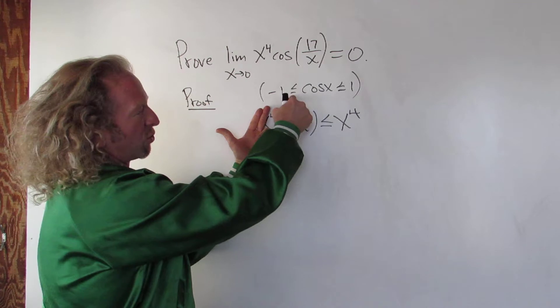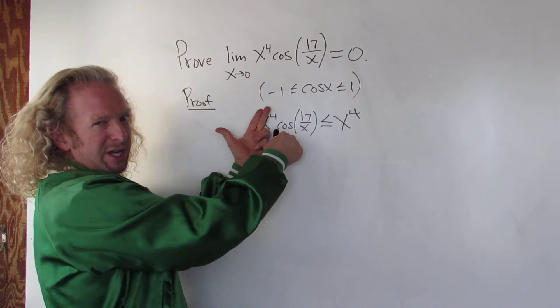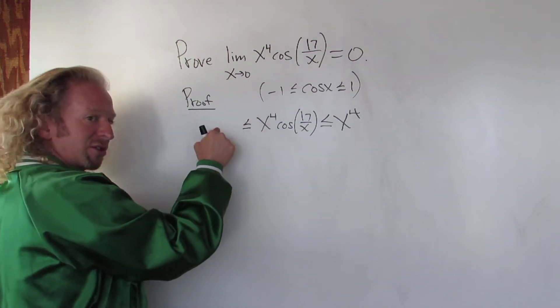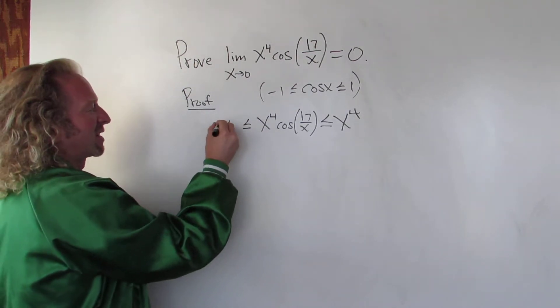Likewise this is greater, read it backwards, greater than or equal to. This is greater than or equal to negative 1. But there's an x to the 4th here. So it's greater than or equal to x to the 4th times negative 1, so negative x to the 4th.